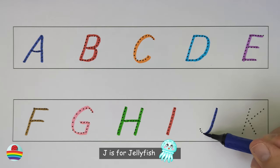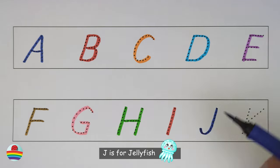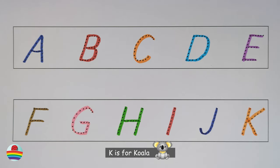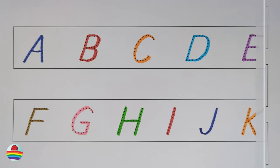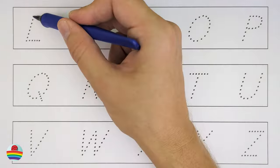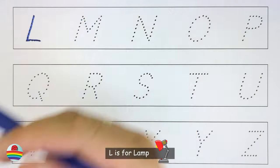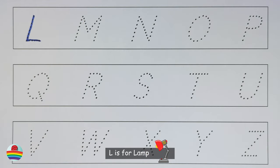J. J is for Jellyfish. J. K. K is for Koala. K. L. L is for Lamp. L.